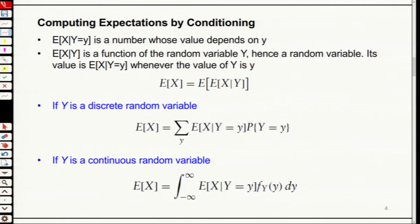So if Y is a discrete random variable — like Poisson — then E[X] is computed by taking different y values. You take each expectation of X under a different y realization, multiply by the probability that Y equals that y, and add all of them together.